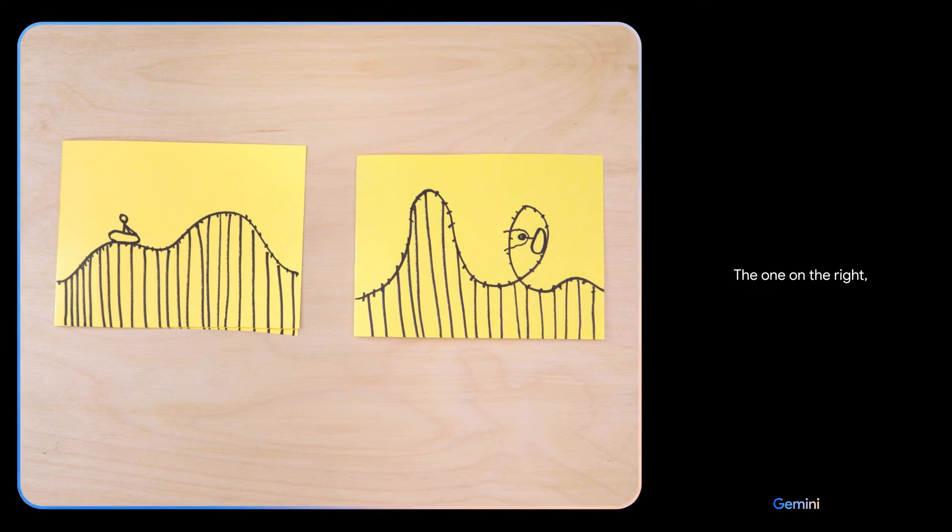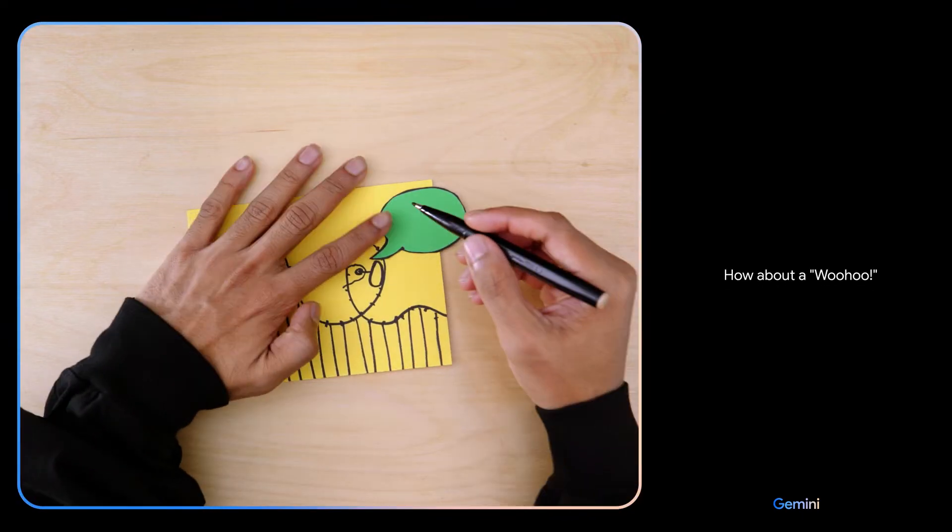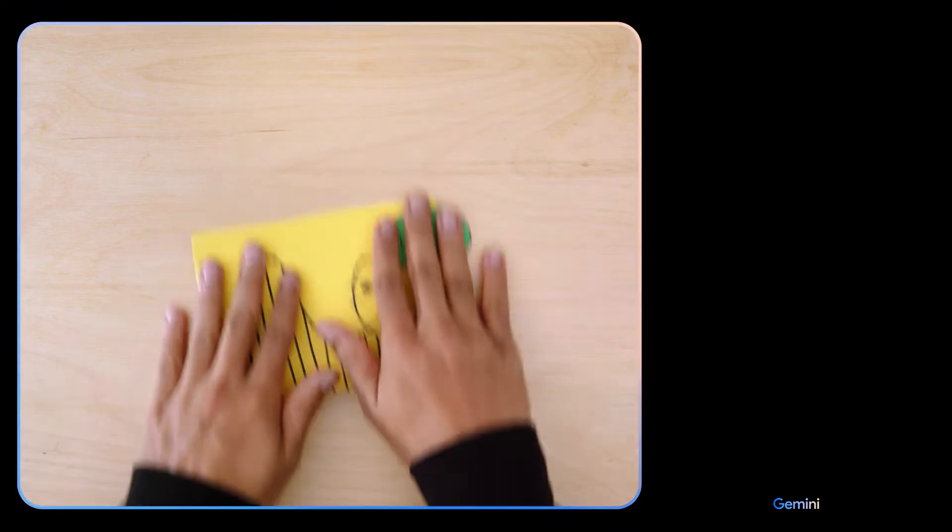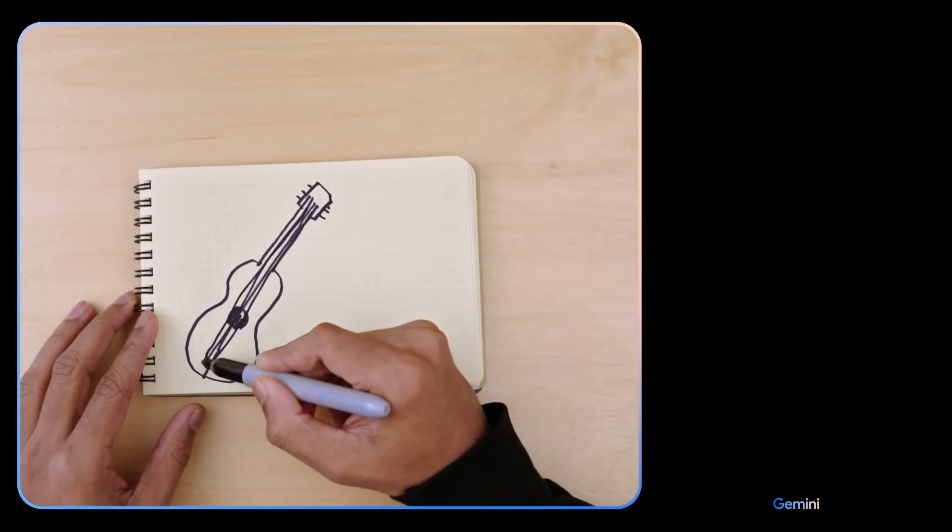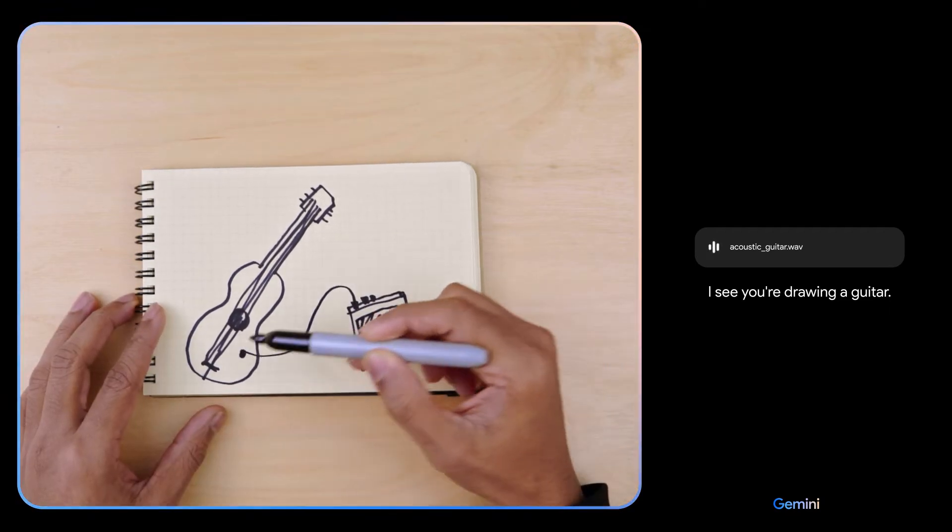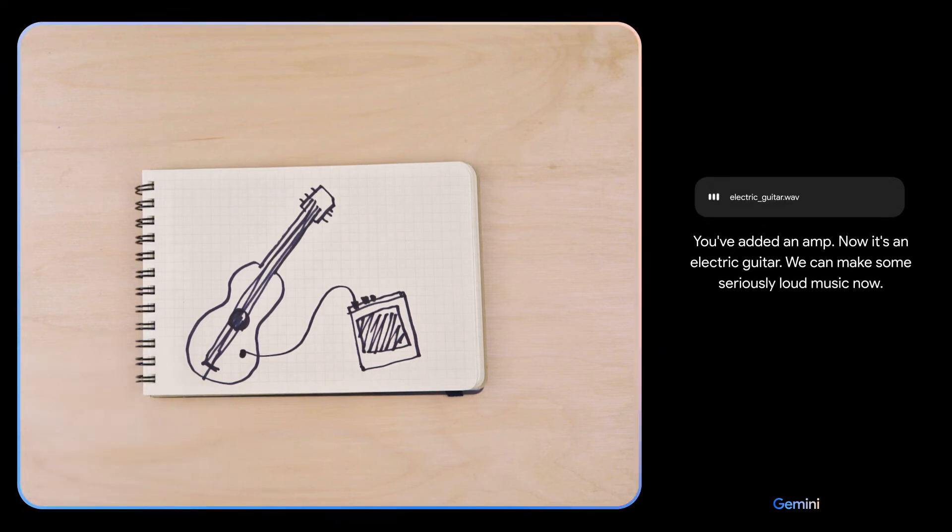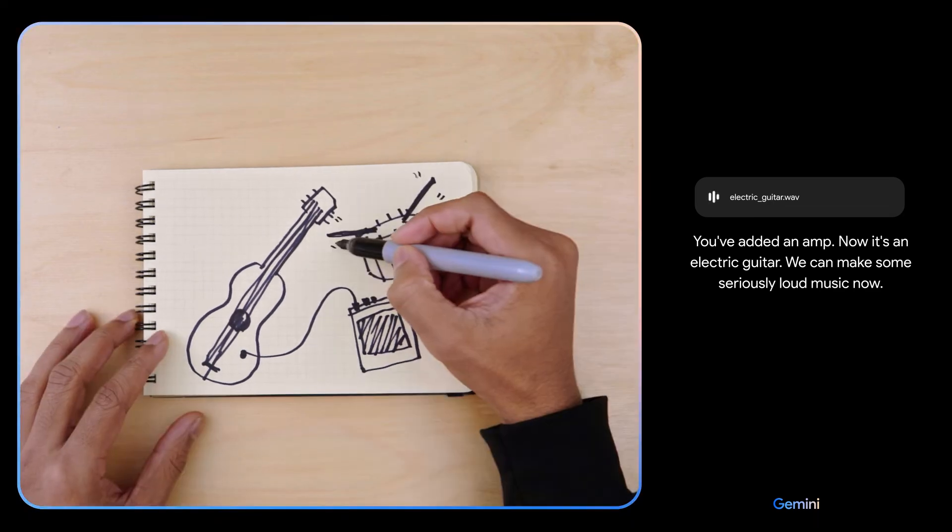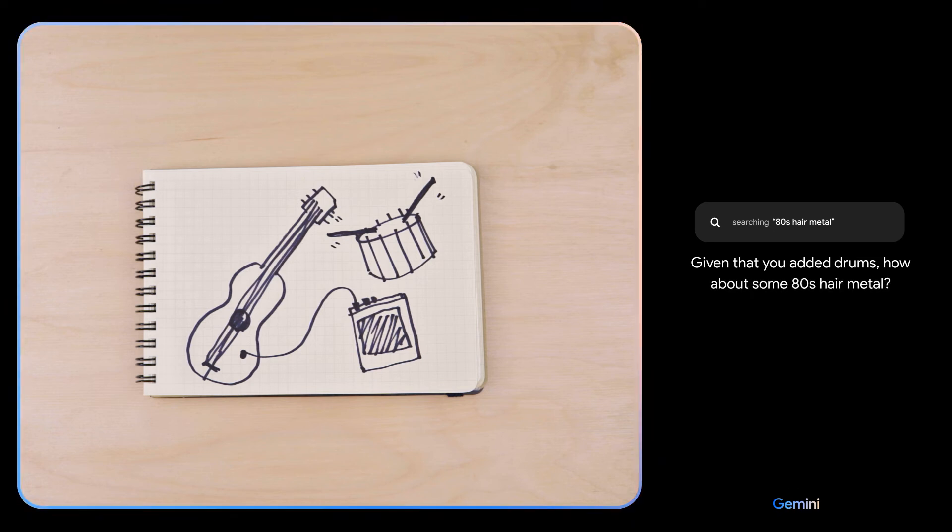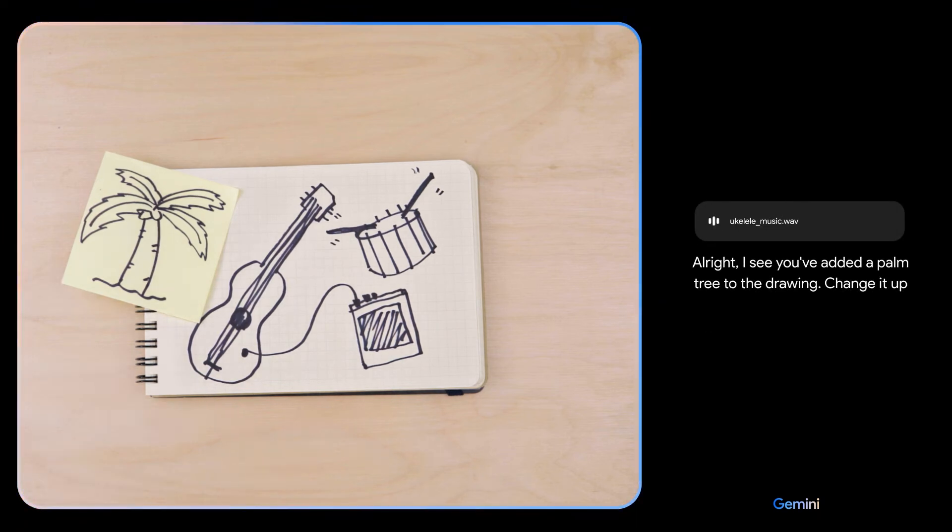Which looks more fun? The one on the right because it has a loop. What do you think this person might be saying? How about a woohoo? Oh, I love that. I see you're drawing a guitar. You've added an amp. Now it's an electric guitar. We can make some seriously loud music now. Given that you added drums, how about some 80s hair metal?